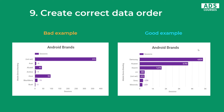Number nine is create correct data order. This is important when you use bar charts. In this example, we've got the same story — Android brands — in both examples, showing sessions from certain device brands. In the bad example, we sort the chart by device branding, so we can't really tell a story from this. But on the right, we order the data by sessions, so we can easily tell that Samsung generates the most sessions.